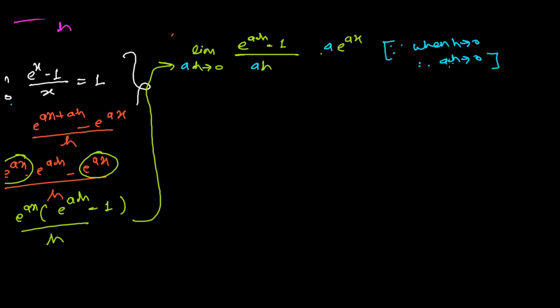If h is almost equal to 0, then whatever you multiply by that will also approach 0. 'Almost equal to 0' doesn't mean exactly 0; it's very close to 0. So if h approaches 0, then ah also approaches 0.